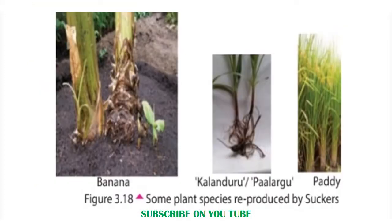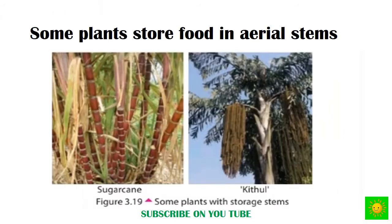Some plants reproduce by suckers — examples include banana, kalanduru, and paddy. Let's see the examples of plants with storage stems: sugar cane and kithul. These plants store food in their aerial stems.